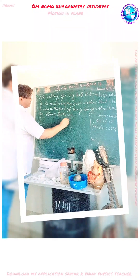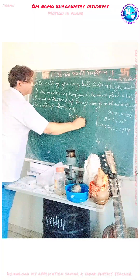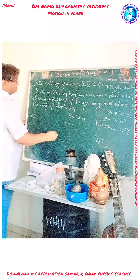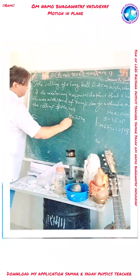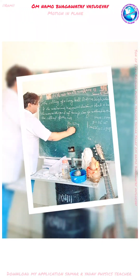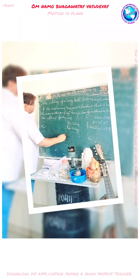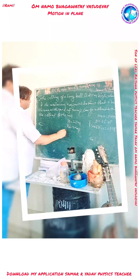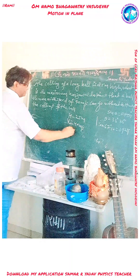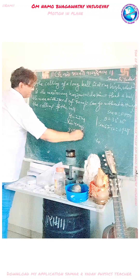So here h is given as 25 meters, the speed is given as v0 equal to 40 meters per second, and g is equal to 9.8 meters per second squared.